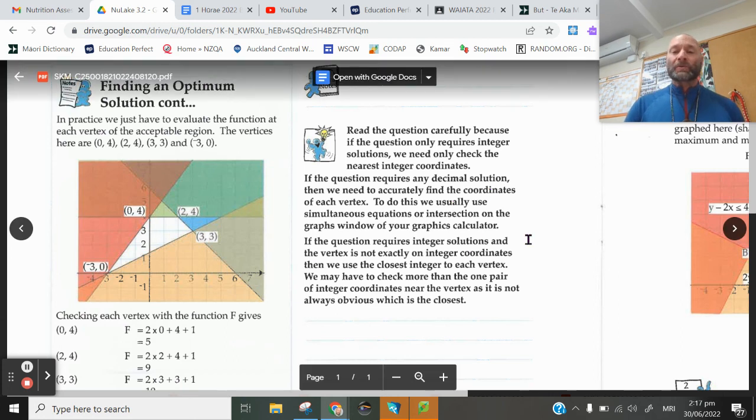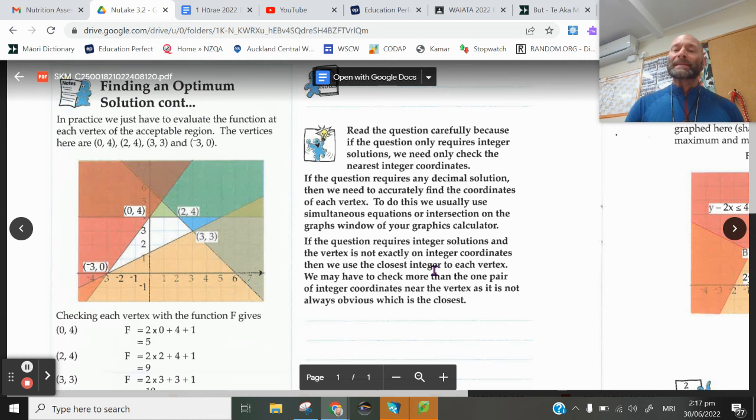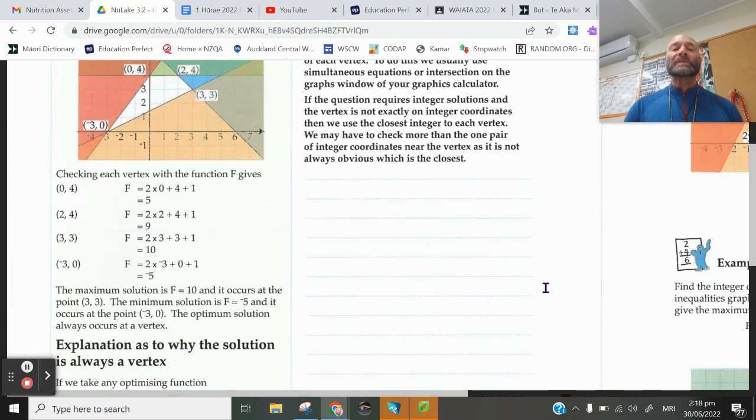If the question requires integer solutions and the vertex is not exactly on an integer coordinate, then you're going to use the closest integer to that vertex. You may have to check more than one pair of integer coordinates near the vertex as it is not always obvious which is the closest.